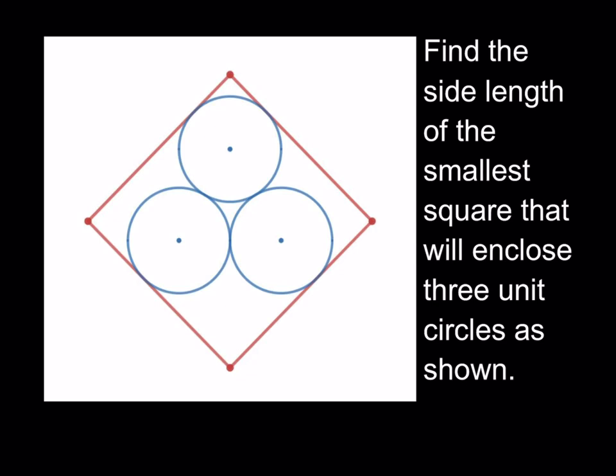Now, we do have a square, the side length of the smallest square that will enclose three unit circles as shown. Of course, this is without overlap. We have three unit circles that are enclosed in a square of smaller side length, and we're going to find the side length for this square. So let's go ahead and get started.